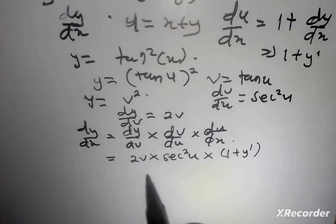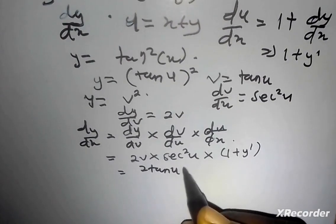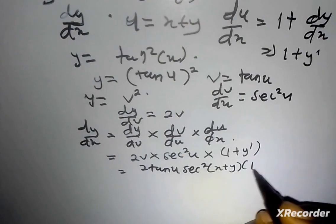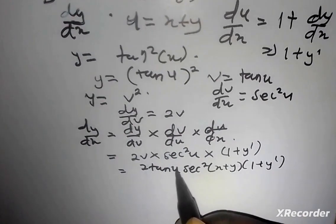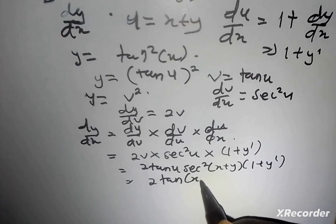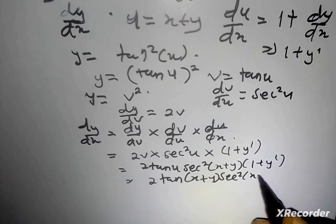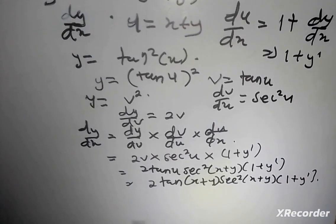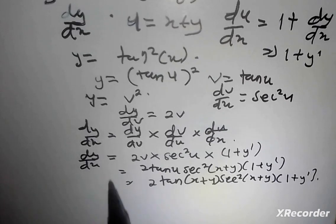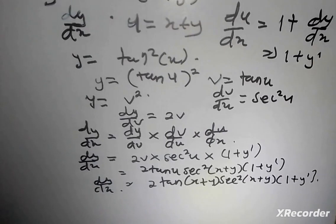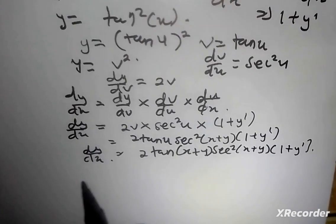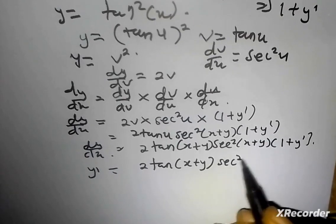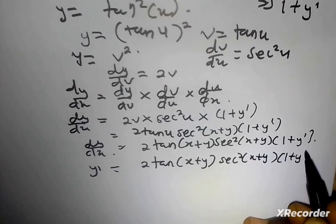I'm not done — I need to simplify this. My v is tan u, so this gives me 2 tan u times sec squared u times (1 plus y prime). Substituting back, u = x plus y, so y prime equals 2 tan(x+y) times sec squared(x+y) times (1 plus y prime). I have y prime on both sides, so this becomes an implicit differentiation problem — I need to make y prime the subject.